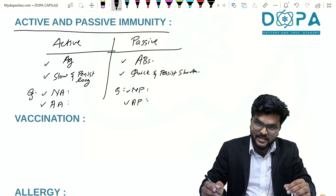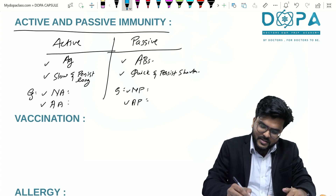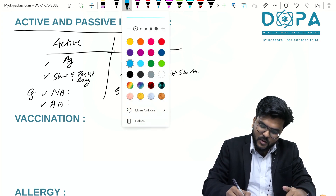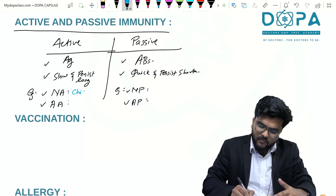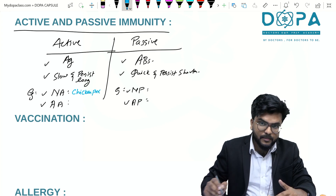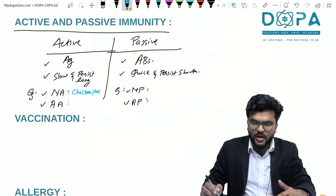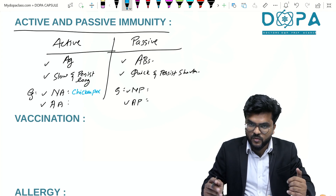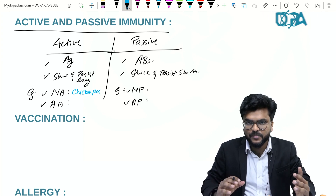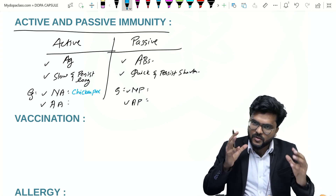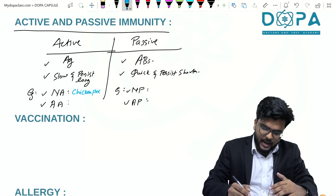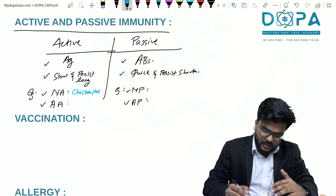One common example of natural active immunity is chickenpox. Once you are struck with chickenpox in your childhood, you won't get a second infection. You will be protected from a second or third infection because of this active immunity.